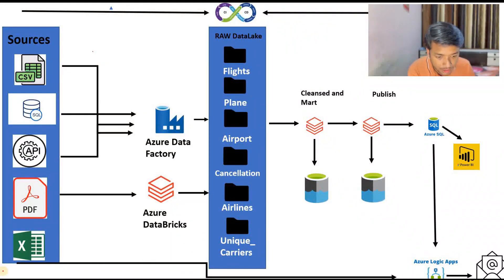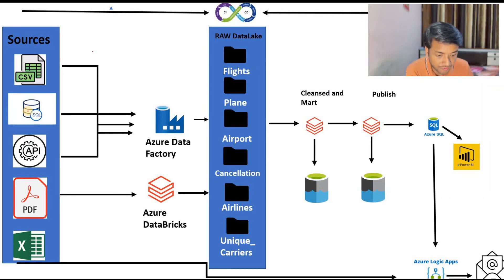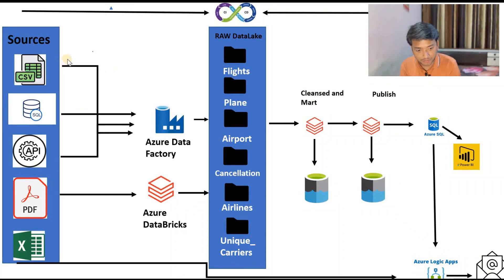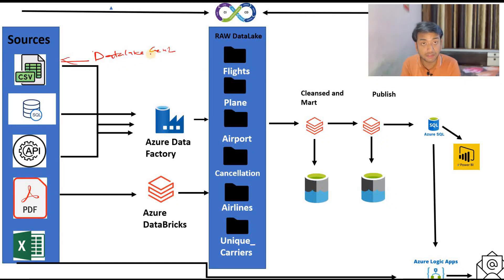So here if you can see, we have this architecture. You can see we have sources - CSV files, SQL tables, APIs, PDF files, and Excel files. If you can see this CSV file, it will be stored in Azure Data Lake Gen2. We will be sourcing these files from Azure Data Lake Gen2, and these files will be stored in zip format.